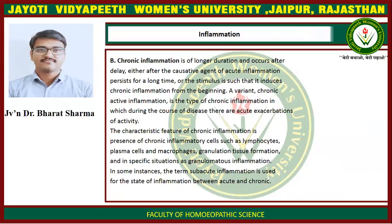The characteristic features of chronic inflammation are the presence of chronic inflammatory cells such as lymphocytes, plasma cells, and macrophages, granulation tissue formation, and in specific situations, granulomatous inflammation.